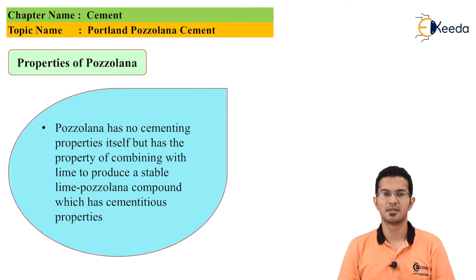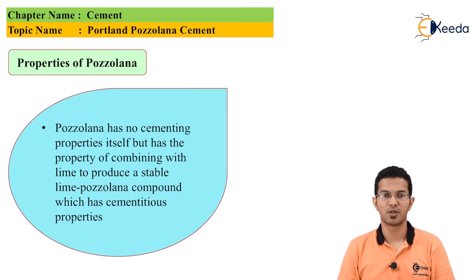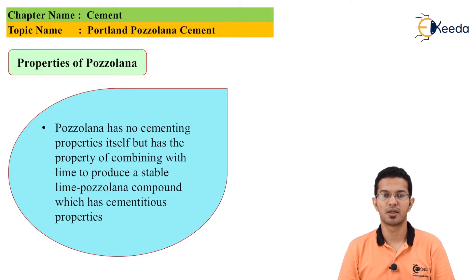Pozzolana materials have some special properties. The pozzolana has no cementing properties itself but has the property of combining with lime to produce a stable lime-pozzolana compound which has cementitious properties.